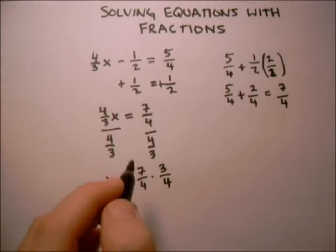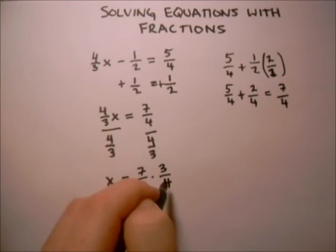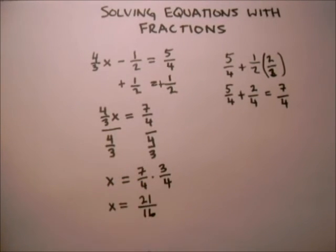And so that gives us 7 times 3 on top is 21, 4 times 4 on the bottom is 16. And then we look and see if this can be simplified. In this case it can't, and so that is our final answer.